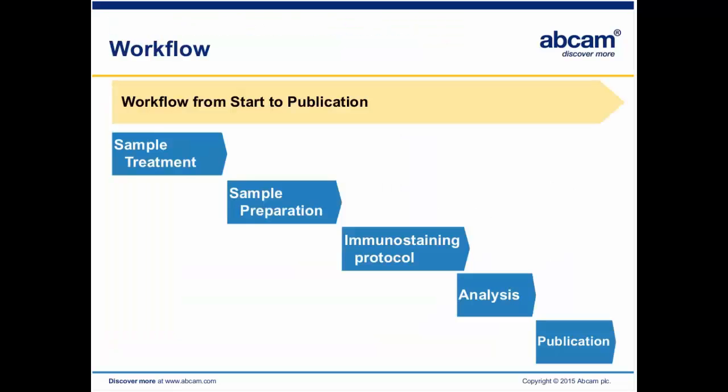This is the basic workflow of your entire process. We're going to talk about sample treatment, sample preparation, and then immunostaining. Sample treatment is your first step — you may or may not use this step in your experiment. Then you'd move on to sample preparation, then your immunostaining protocol, which would be IHC or ICC. Finally, your analysis, and the end goal would be a publication.